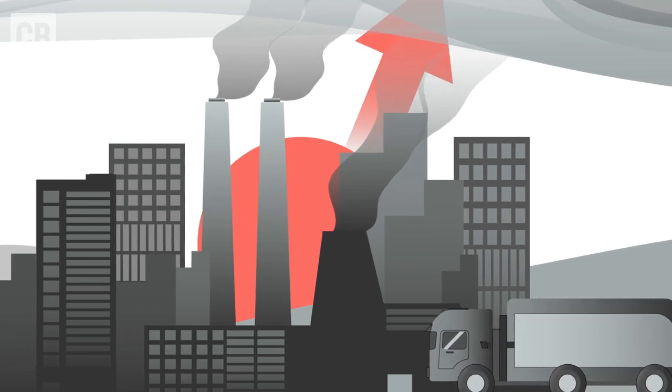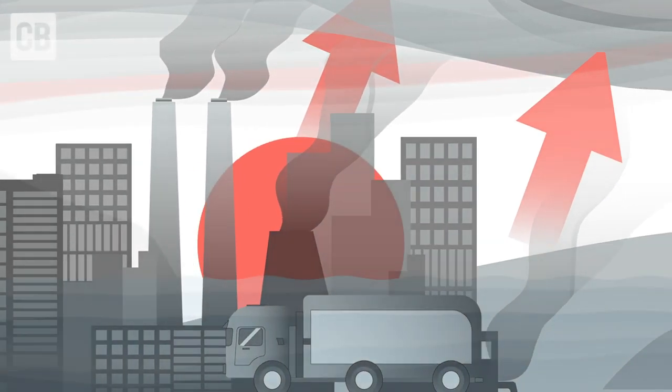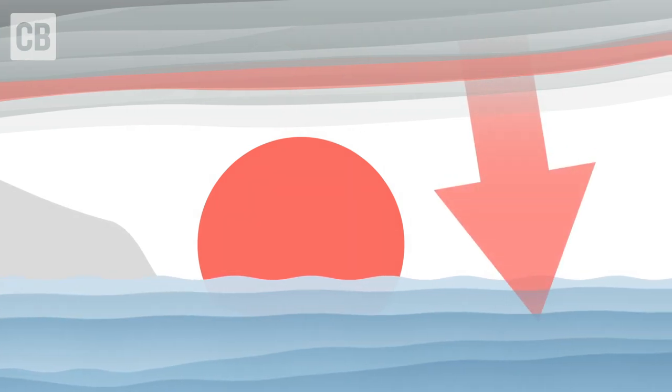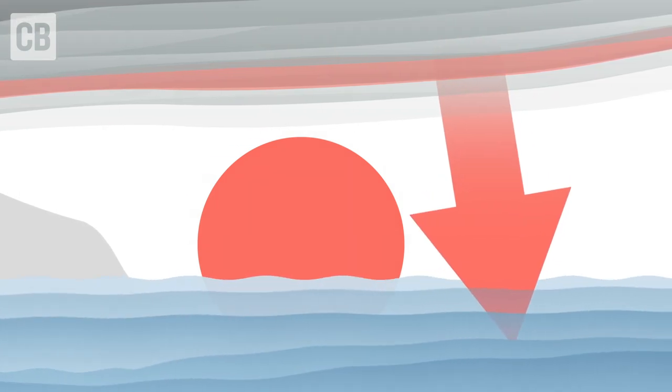When carbon dioxide is released by humans, around 30-40% is taken up by the oceans. The rest either remains in the atmosphere or is absorbed by the land.